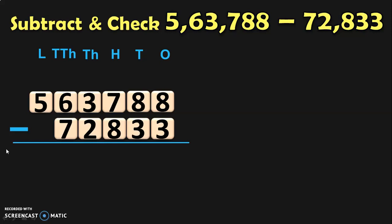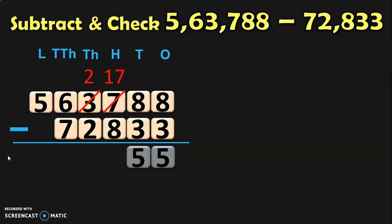8 minus 3 in the 1s place will give you 5. Next, move to the 10s place where you have 8 minus 3, which will give you 5. Now move to the 100s place where you have 7 minus 8. We know that 8 is greater than 7, so you move to the 1000s place for borrowing. You have 3 thousands which, when regrouped, becomes 2 thousands plus 1 thousand or 10 hundreds. When you give that 10 hundreds to the hundreds place, 700 becomes 17 hundreds. Now, 17 minus 8 in the hundreds place will give you 9.